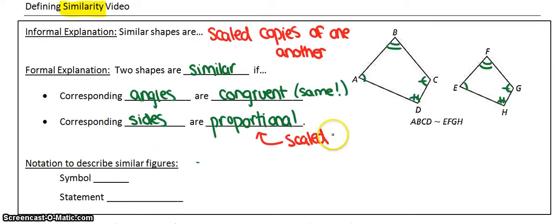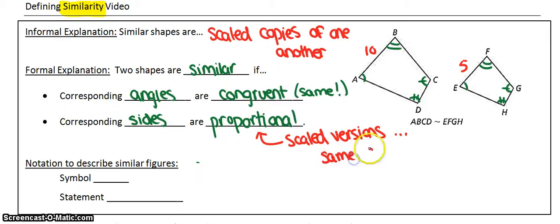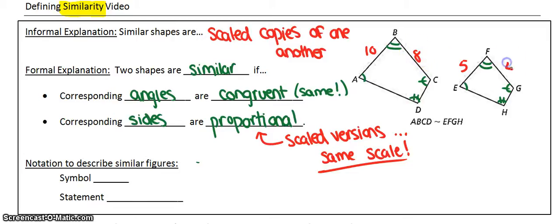When I say corresponding sides are proportional, it means they're not the same, but they're scaled versions of one another. For example, if this side were 10 and the shape were half the size, this side would be 5. So they're not the same side lengths, but they're proportionate — all sides would have the same scale factor. So if one side is half, and another side on the big shape is 8, that side would have to be 4.